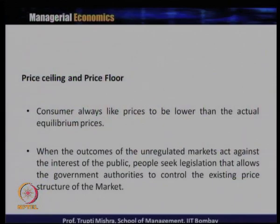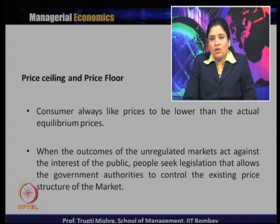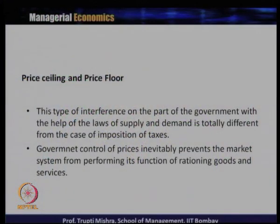Then we will discuss two specific cases where the price is decided by the government. Consumers always prefer prices to be lower than the actual equilibrium price. When the outcomes of the unregulated market act against the interest of the public, people seek legislation allowing government authority to control the existing price structure of the market. Sometimes producers collude and decide the price, so the government comes into the picture and fixes a price. This type of interference by government with the laws of supply and demand is totally different from the case of imposition of tax; government control of price inevitably prevents the market system from performing its function of rationing goods and services.